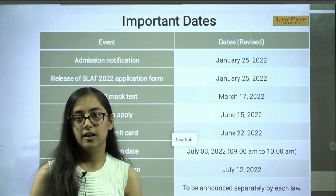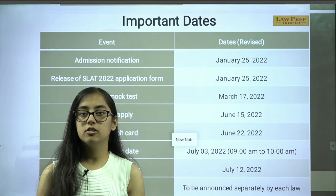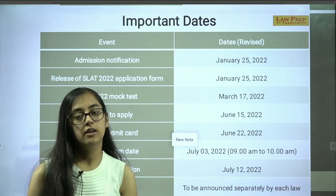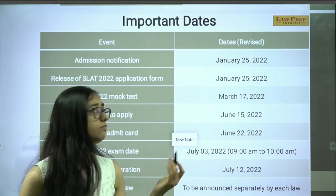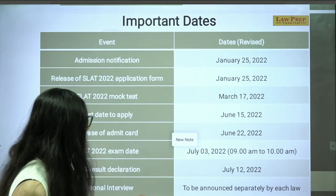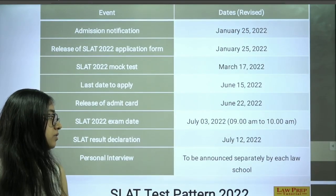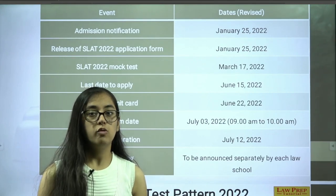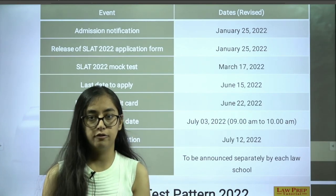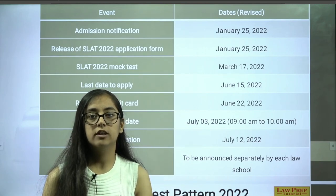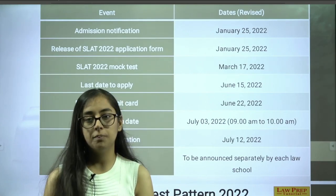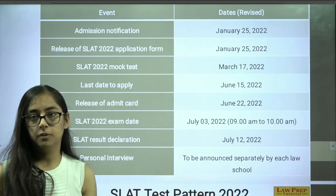The combined result of SLAT and VAT will be declared on 12th July. Those who clear the cutoff will be selected for the personal interview round. After the personal interview, final merit lists are generated and you'll be told whether you are selected for whichever university — Pune, Noida, or Hyderabad — for which you've also cleared the personal interview. Dates for personal interviews will be announced separately by each law school, and you'll receive separate mails from each university for which you've cleared the cutoff.